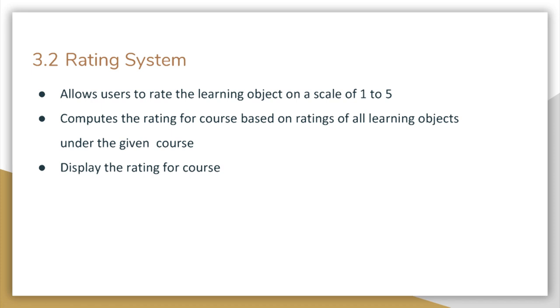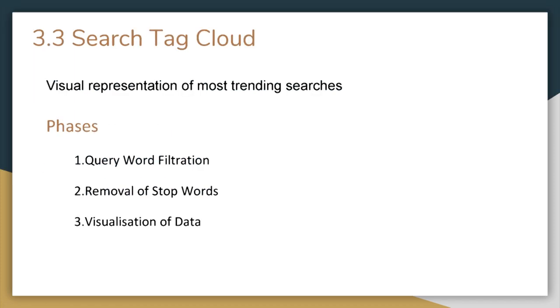Basically with every learning object, we have provided a scale. Users can rate the content and using the individual rating of all the contents, we can compute the cumulative rating of the course. This was all about the rating system and the third module is search tag cloud.